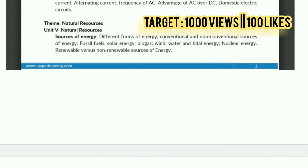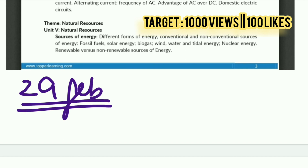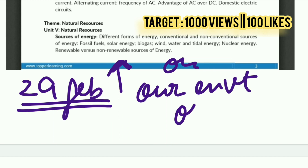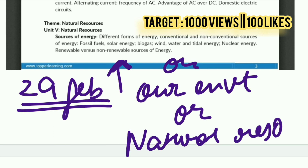Don't do any new numericals or pick up any new books. You have to follow whatever notes you made before. In physics, it is important to cover both the theory questions and the numericals. In addition to the physics chapters, on the 29th you also have to do a chapter from Sources of Energy, Our Environment, and Management of Natural Resources.